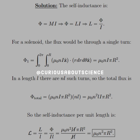For a solenoid, the flux through a single turn — since we're going to have to take this one turn at a time — of course we have a circle because it's a solenoid, and then we'll just multiply by every turn there. Here's the math: you have μ₀NI·πR² for the flux through a single turn.